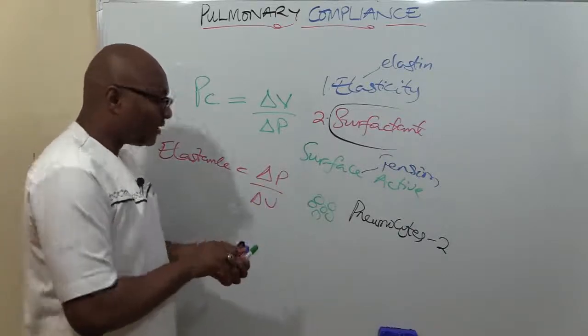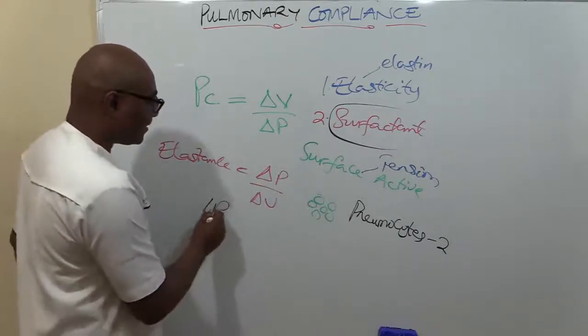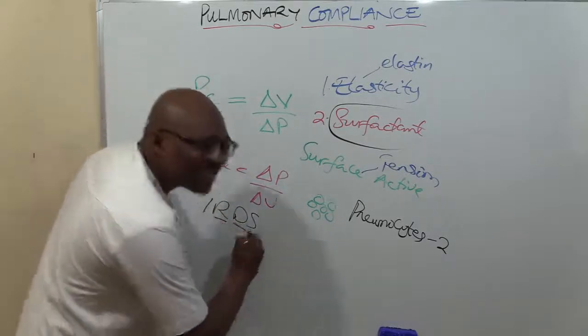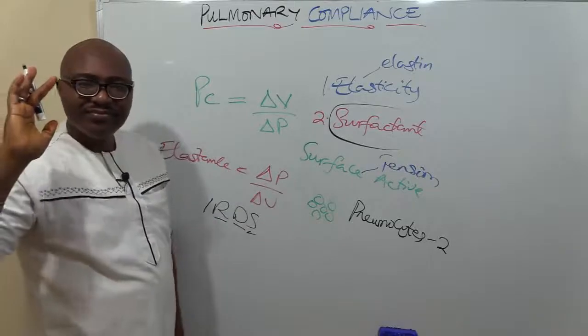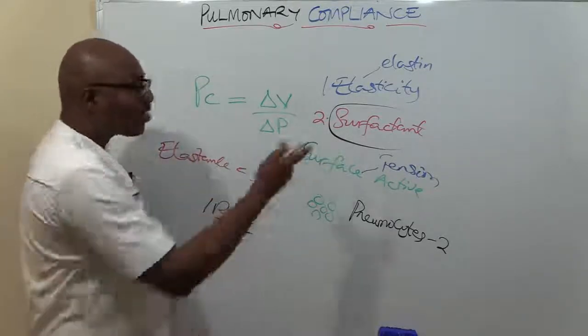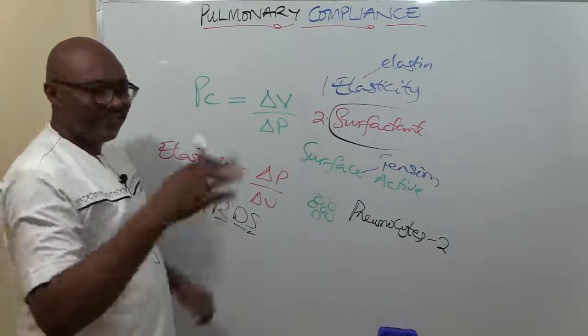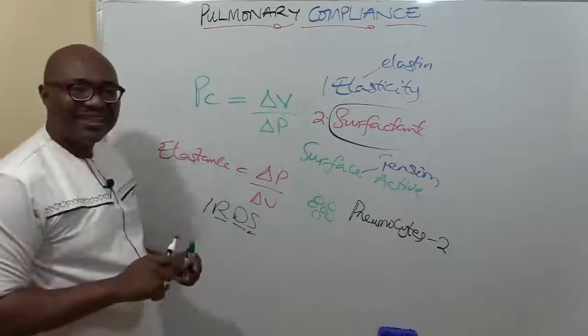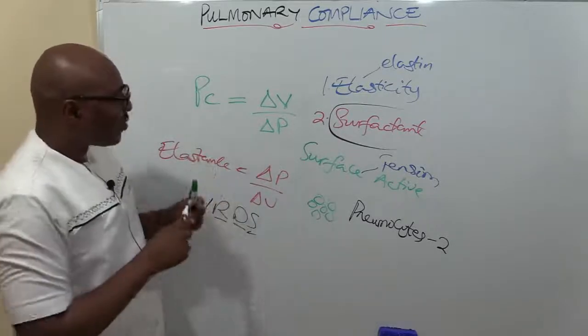Premature infants have what is known as IRDS - Infant Respiratory Distress Syndrome. They like to ask you, they can just give you a short note on infant respiratory distress syndrome and ask the cause. The solution, of course - let's not talk about that. This is what happens.